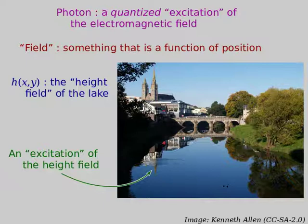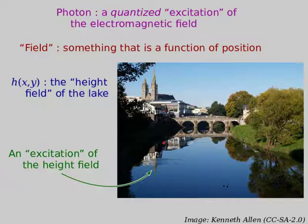What does that mean? A field is just something that is a function of position — that's all the word field means. When you hear the word field, it just means function of position. The electromagnetic field means everywhere in space there is a vector value of the electric field and of the magnetic field. Here's a simpler field: the height field of a lake. Instead of E-vector as a function of x, y, and z, we have height as a function of x and y. This height field is mostly very smooth and flat — a nice reflecting, unexcited field. What causes the excitation? Ducks. Ducks are to water as charges are to the electric field.